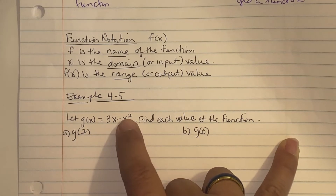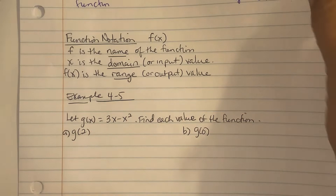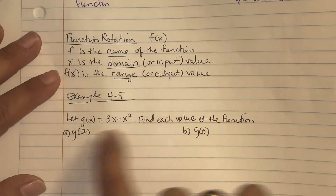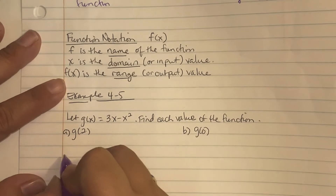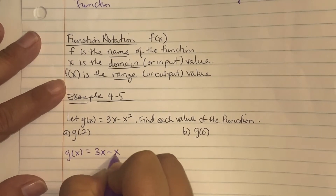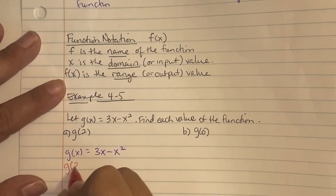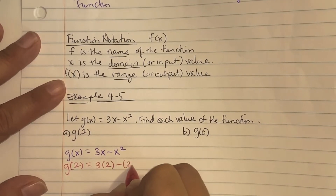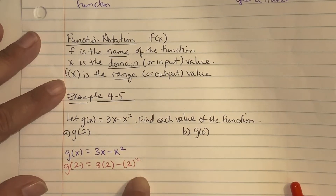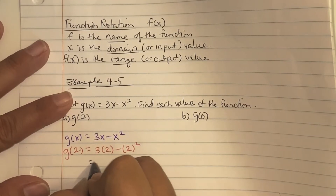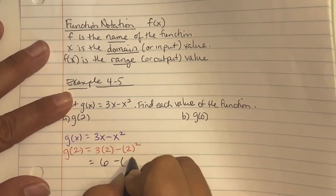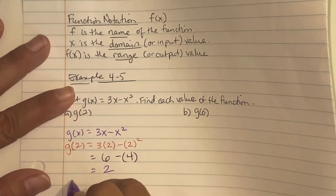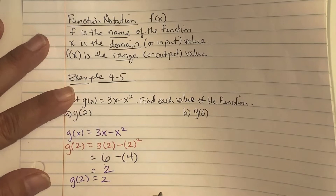They want us to find each value of the function — to evaluate g(x) = 3x minus x squared. In part a, they want us to find g(2), so we substitute 2 in place of x: three times two minus two squared. Using order of operations, three times two is six, and two squared is four, so six minus four equals two. So g(2) equals two, and as an ordered pair, when x is two, y is two.